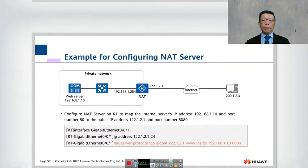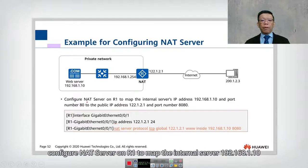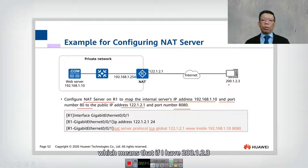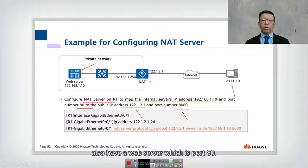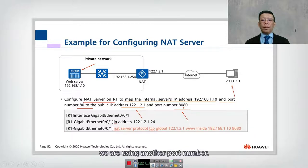To configure NAT Server, you map the internal server 192.168.1.10 port 80 to the public IP 122.1.2.1 with port 8080. The reason to change the port number is that some routers also have a web server on port 80, which can cause confusion — the router may think the request is for its own web service instead of the internal web server. To prevent this conflict, we use a different external port number such as 8080.